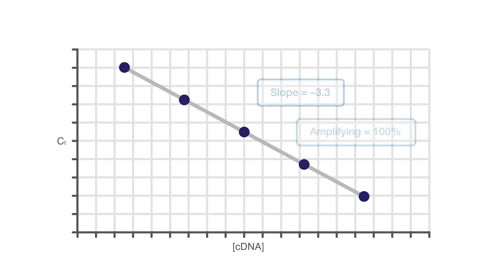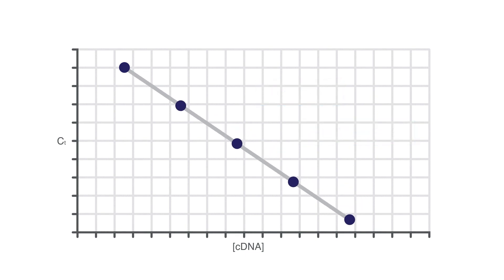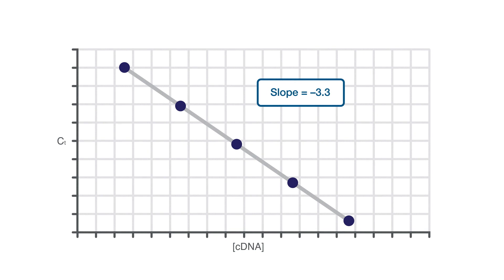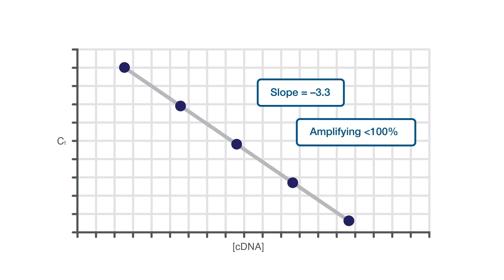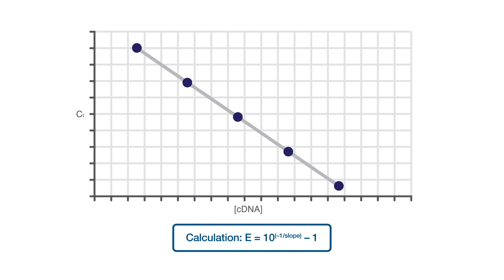But if the value is more negative than this — say negative 3.7 — then the efficiency will be less than 100%. There's actually a formula into which you can plug the slope and get your numerical efficiency.